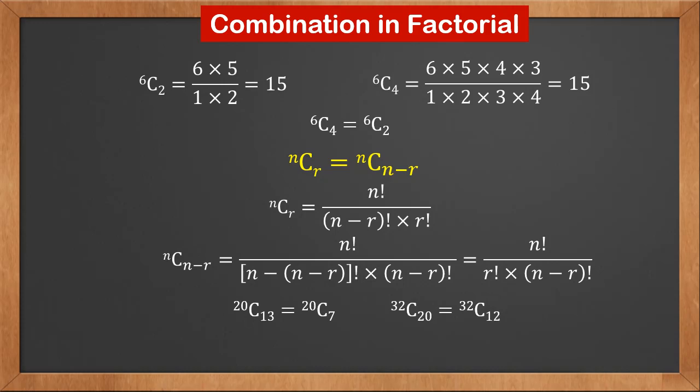So we have 20C13 is equal to 20C7. 32C20 is equal to 32C12. It means selecting r items is equivalent to selecting n minus r items.